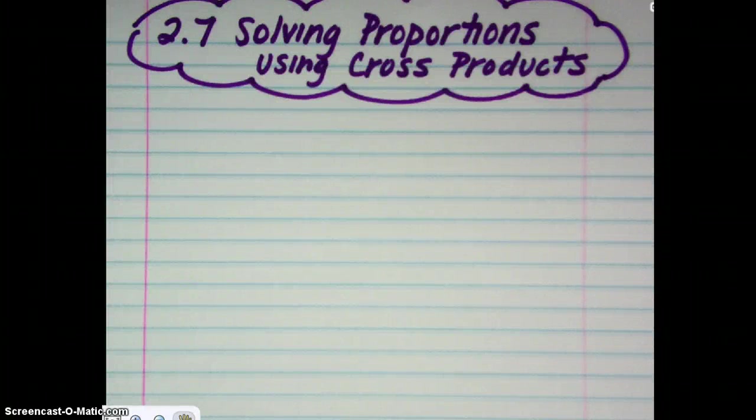Okay, so Chapter 2, Section 7 involves solving proportions using cross products. This will tie into Chapter 2, Section 6, which is when you were introduced to working with ratios and proportions.